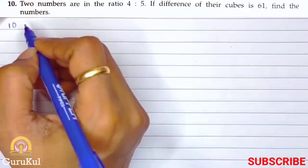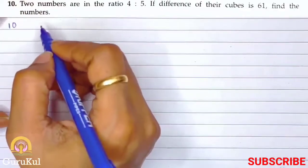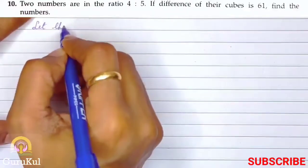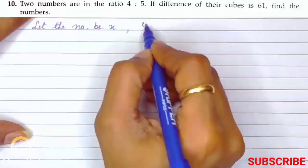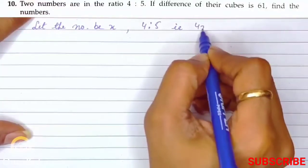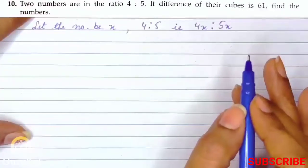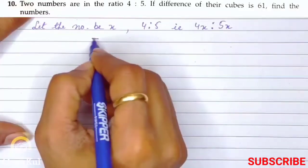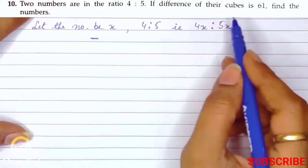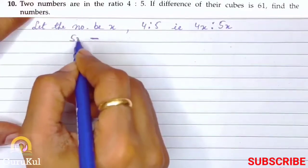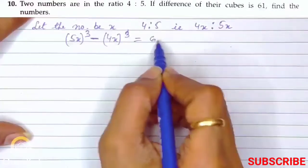Question number 10: Two numbers are in the ratio 4:5. If difference of their cubes is 61, find the numbers. First, let the numbers be x. The ratio is 4x:5x. The difference means minus. Difference of their cubes means (5x)³ - (4x)³ equals 61.